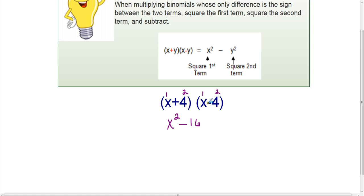Okay, so you could think of four times negative four, and you'll still get -16. And that is perfectly fine. Okay, so that is the rule. If you can just remember, if they're exactly the same except the signs that are different, square the first term, square the second term, subtract, that's the answer. It's a very easy formula to remember.